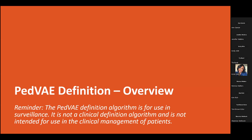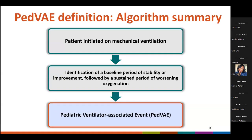Now let's take a look at the PVAE definition. I want to emphasize that the PVAE definition algorithm is for use in surveillance only. It is not a clinical definition algorithm, and it is not intended for use in the clinical management of patients. Once a patient is placed on mechanical ventilation, you will begin looking for a baseline period of stability or improvement on the ventilator that is immediately followed by a sustained period of worsening oxygenation. If these parameters are met, a PVAE is identified.